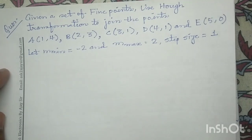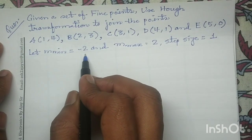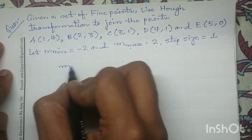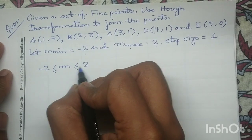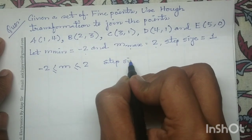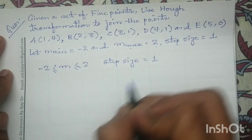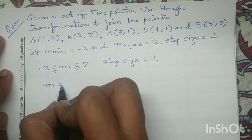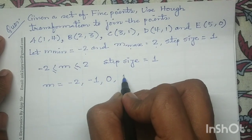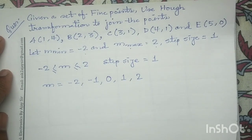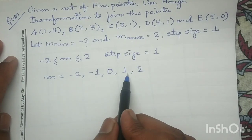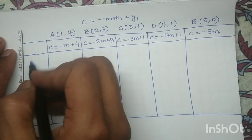Now look at the next part of the question. m_minimum is given to be −2 and m_maximum is given to be 2. So m varies from −2 to 2. The step size given in the question is 1. So the permissible values of m are: −2, −1, 0, 1, and 2.